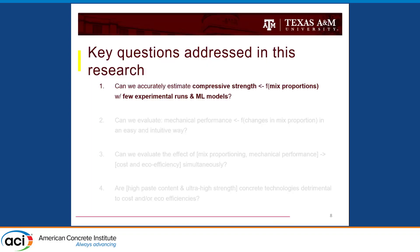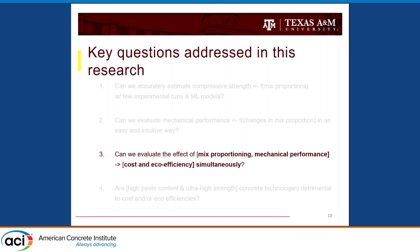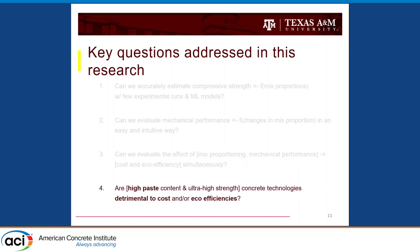I have a few research questions to keep track of where we're going. First, can we accurately estimate compressive strength as a function of ingredients with few experimental runs and machine learning? Second, can we show these predictions in an easy and intuitive way rather than just spreadsheets or software? Third, can we evaluate the effect of mix proportion and mechanical performance on cost and eco-efficiency simultaneously? Finally, are high paste contents or ultra-high-strength concrete detrimental to cost or eco-efficiency?